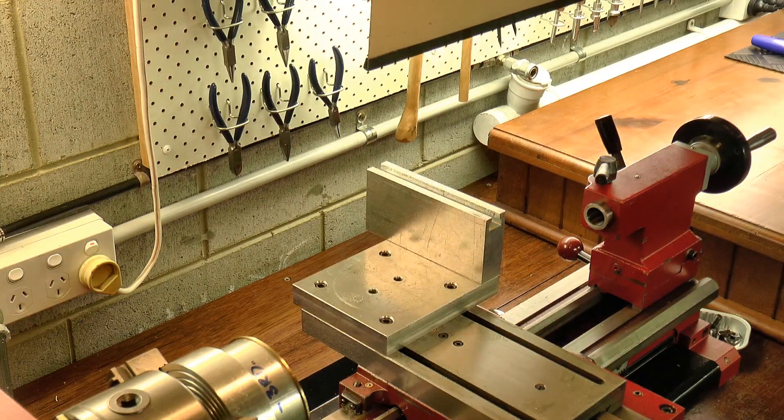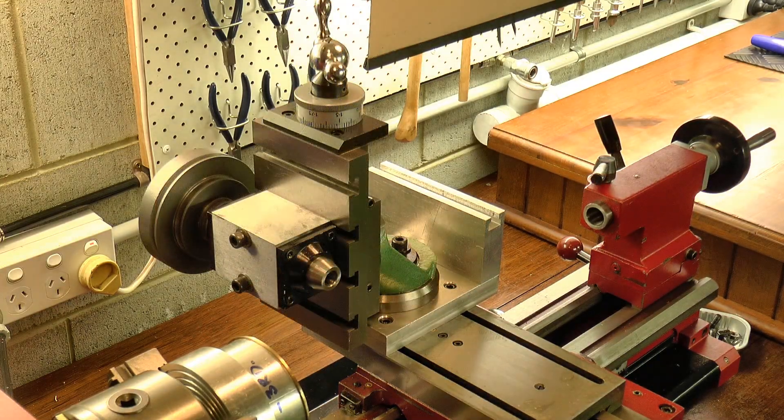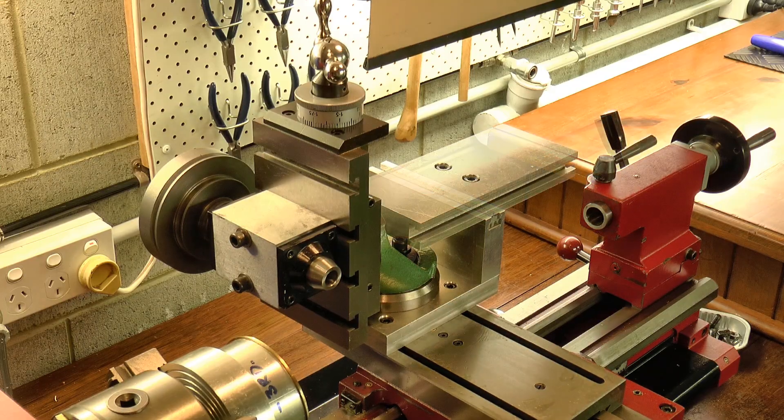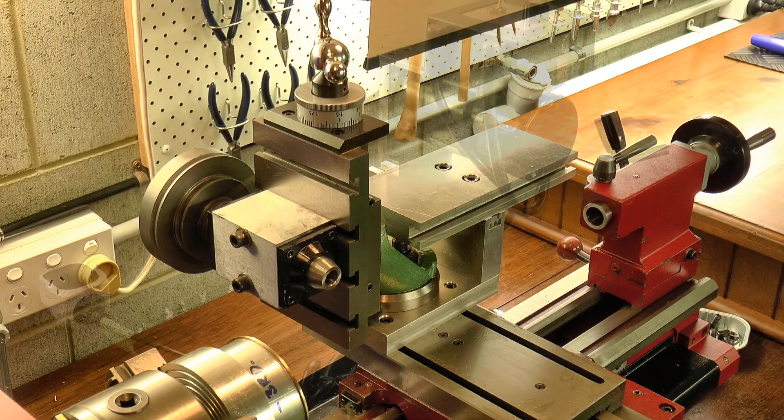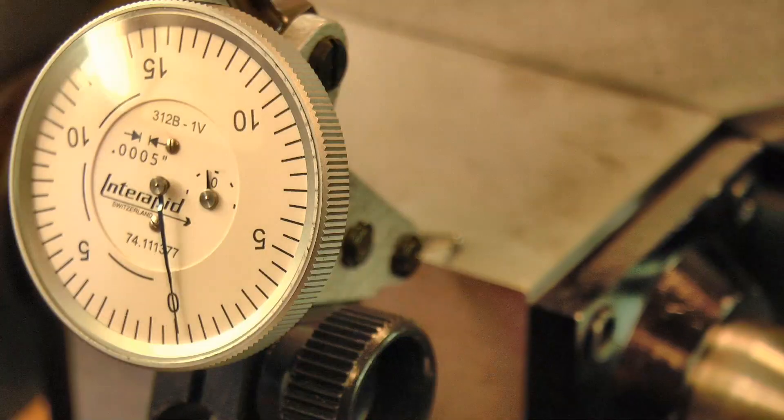I made an adapter plate for a Myford vertical slide to fit the cross slide, and also a platform that will hold the motor and speed control. A spindle is mounted on the vertical slide, and then it's indicated to be square.